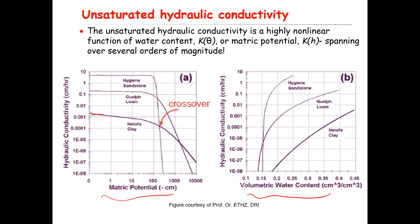As volumetric water content decreases, the unsaturated hydraulic conductivity decreases. Similarly, as matric potential gets more negative — note the unit is minus centimeter because matric potential is always negative — as you go toward more negative conditions, the hydraulic conductivity decreases drastically. Note this is a logarithmic scale.